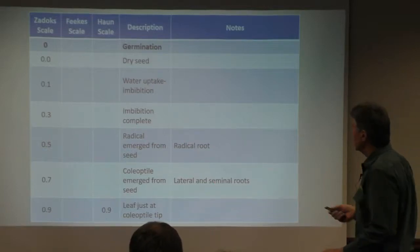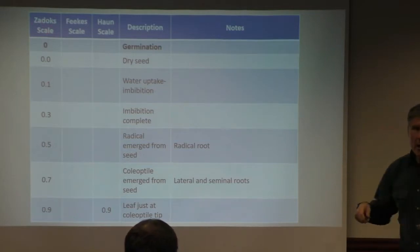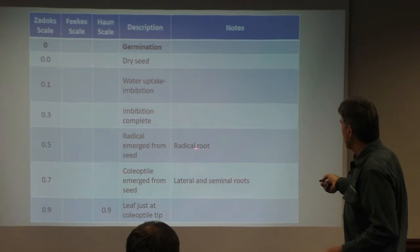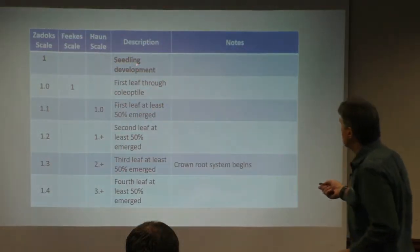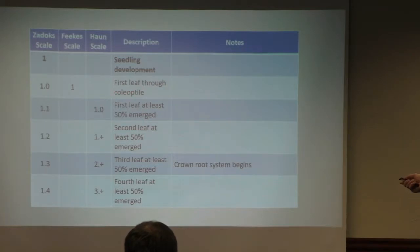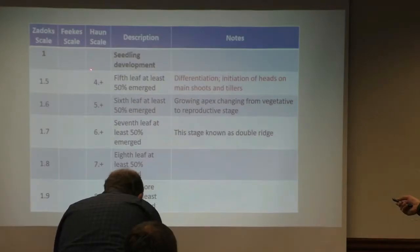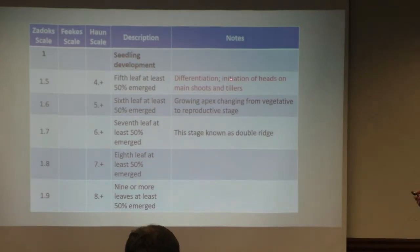All these things start happening and it doesn't matter what scale we go by — whether we're Zadox, Feeks, or Hans — they all have what's going on inside this little plant. We start to germinate, get the radical root going down, and get lateral and seminal roots going. This plant is taken off below ground. Now we're starting to get some leaves above the surface, our crown system beginning to develop, and we've initiated the heads, the main shoots, and the tillers.